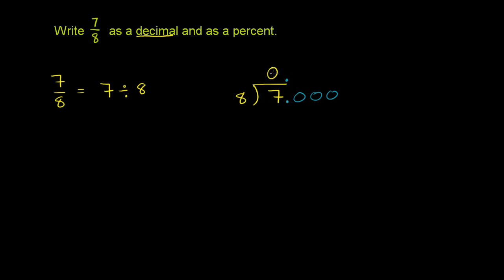So we say 8 goes into 7 0 times. 0 times 8 is 0. You subtract. 7 minus 0 is 7. Now we can bring down a 0. We bring down a 0. It becomes 70.